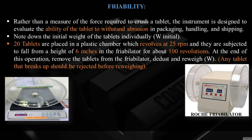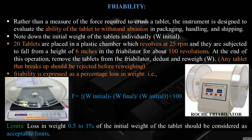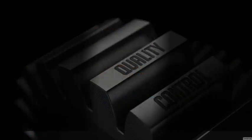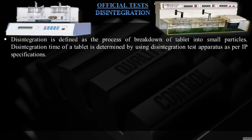At the end of the operation, remove the tablets from the friabilator, dust them, and re-weigh. Any tablet that breaks up should be rejected before re-weighing. Friability is expressed as a percentage loss in weight: (W-initial − W-final) / W-initial × 100. The acceptable limit is a loss of 0.5 to 1% of the initial weight of the tablet.